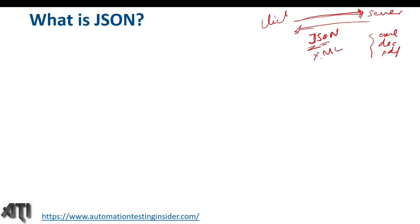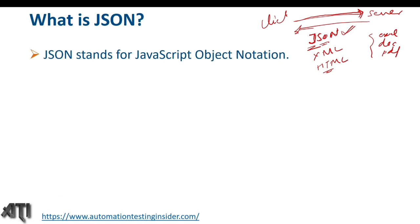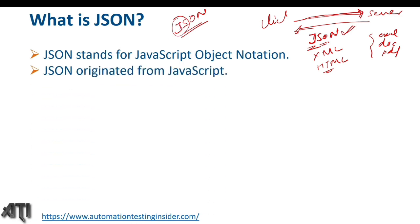There are other file formats as well like XML and sometimes HTML, but JSON is the most popular. JSON stands for JavaScript Object Notation — that is the full form. It is derived from JavaScript, that's why the name says it itself. JSON originated from JavaScript.